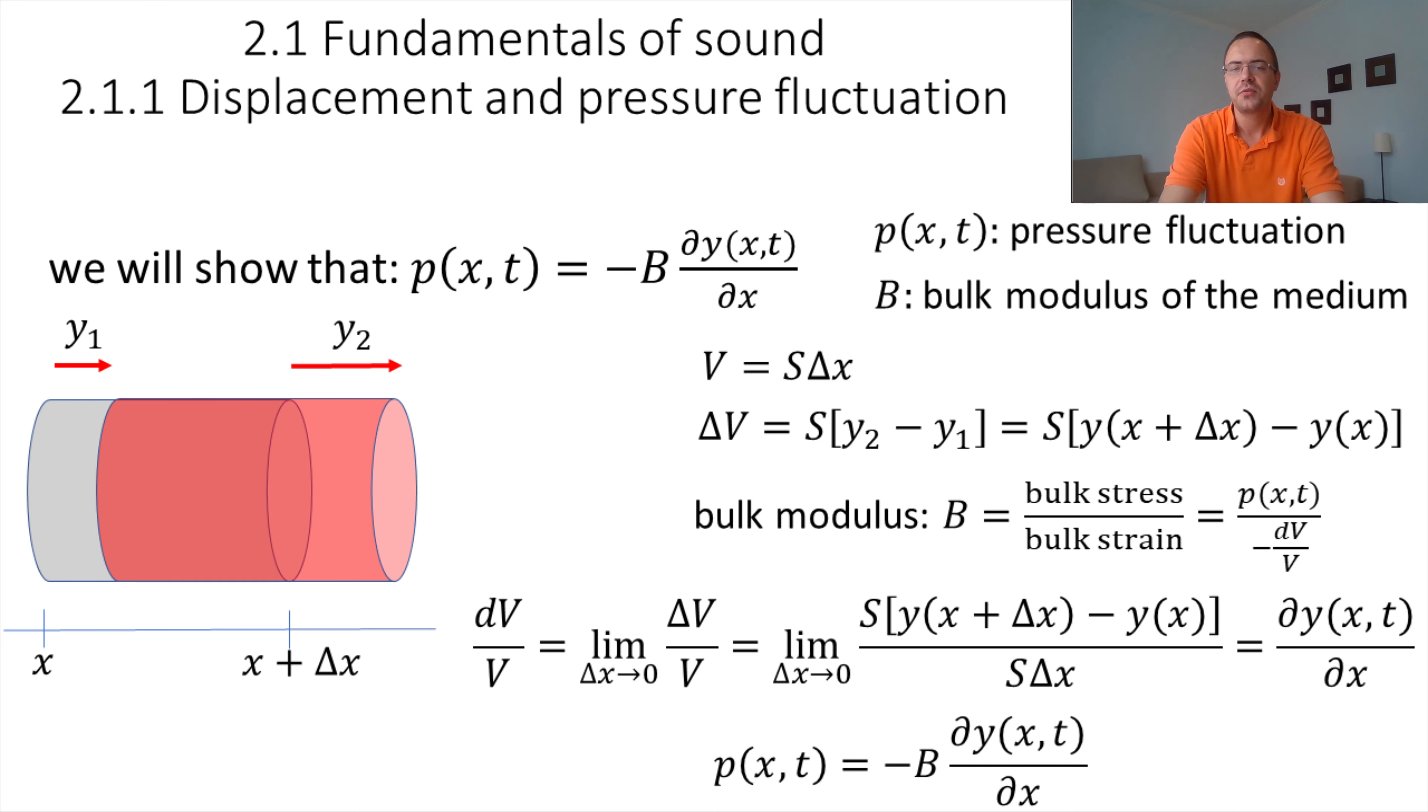Now, let's look at the expression for the change of volume dV over V. This, in fact, represents the limit when delta x tends to 0 of delta V over V. And we have the expression for delta V. It is the section s times y of x plus delta x minus y of x. And the expression for the volume V is just simply s times delta x. Now you can simplify and remove the section. And also you can recognize that this expression represents the derivative of the y function for the displacement. Now you can combine this with the definition of the bulk modulus, and you obtain that the pressure fluctuation p is equal to minus B dy/dx. This is the relation we wanted to show.